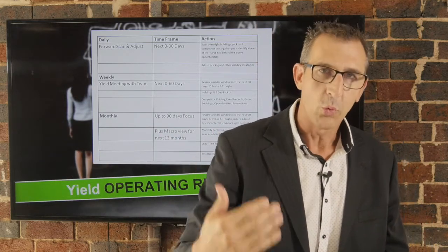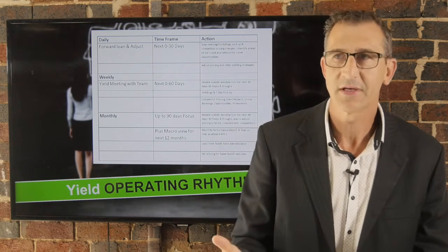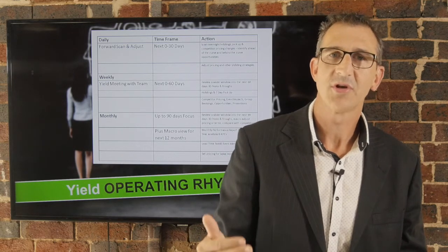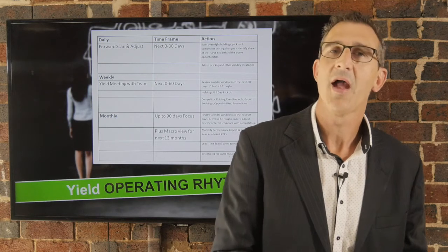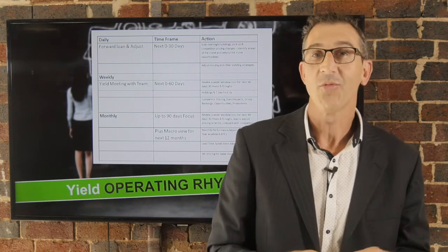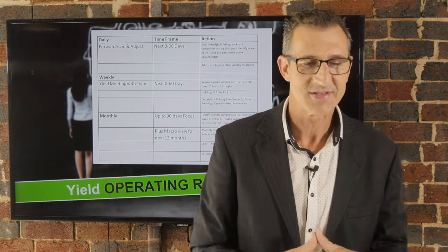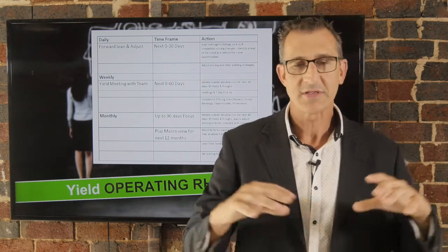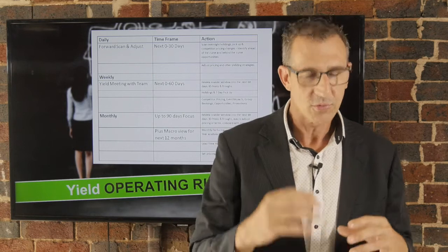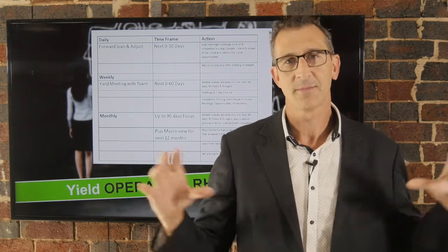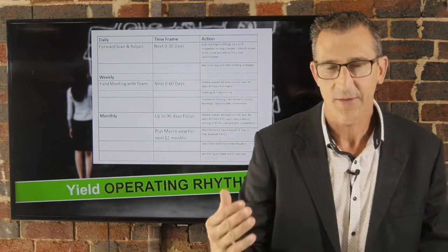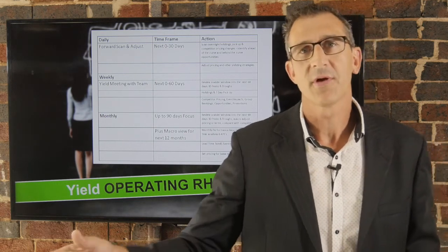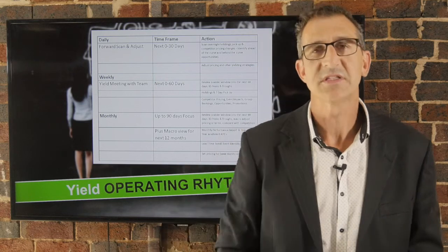On a weekly basis, we encourage you to have a yield meeting — large team, small team, or no team. There's a designated time every week where you stop, sit down with someone, and look at the numbers and discuss. The point is to get some outside perspective, because if you're the only one looking at the numbers all the time you can get a little bit insular. The scope of a weekly yield meeting is to scan a little further ahead, out to the 60-day mark.